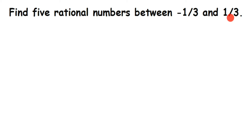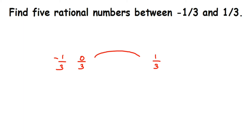Remember, there are infinitely many rational numbers between two rational numbers. But how do we find them? If I take minus 1 by 3 and 1 by 3 and look between them, after minus 1 we get 0, so that's 0 by 3, and then directly we have 1 by 3. So we could only find one number this way.